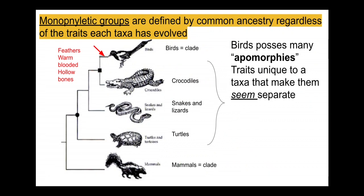Monophyletic groups are defined by common ancestry regardless of the traits each taxon happened to evolve. Genetic and morphological evidence indicates that birds and crocodiles are sister taxa; however, birds have traditionally been given special status because of their unique features, which we call apomorphies.